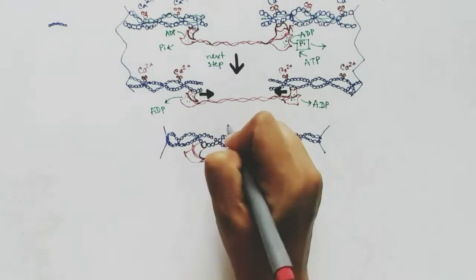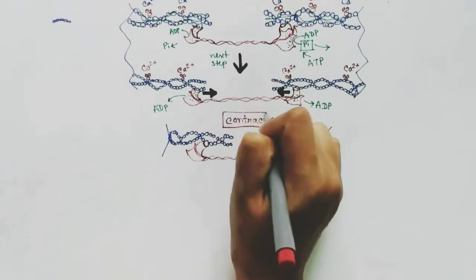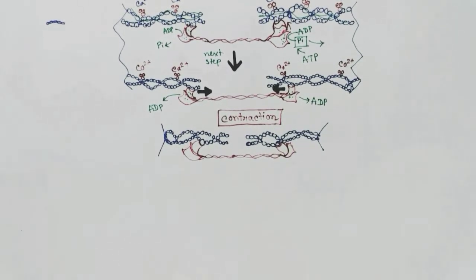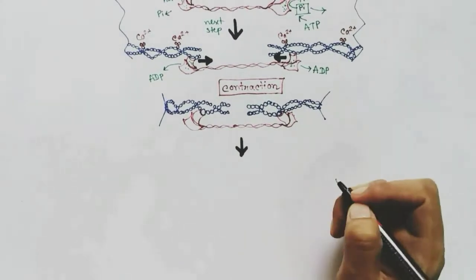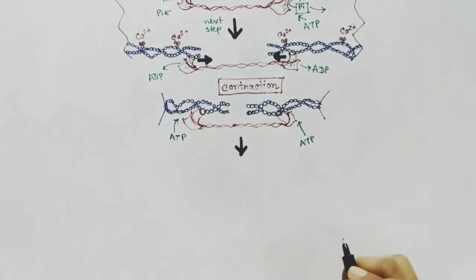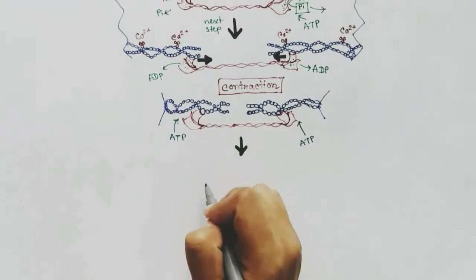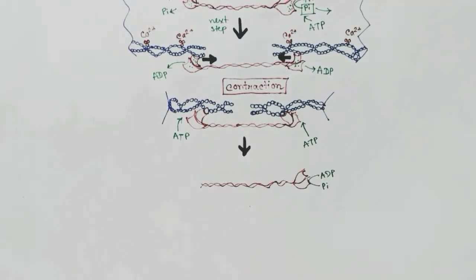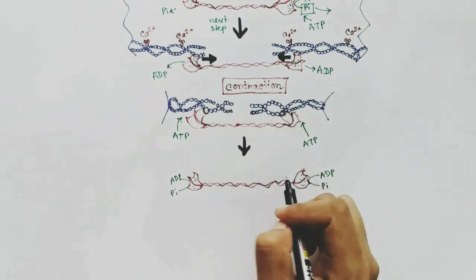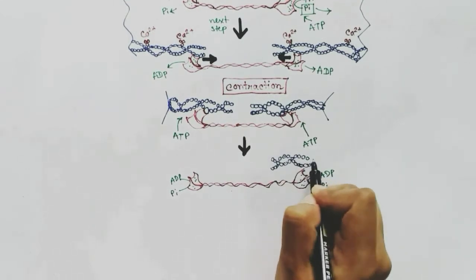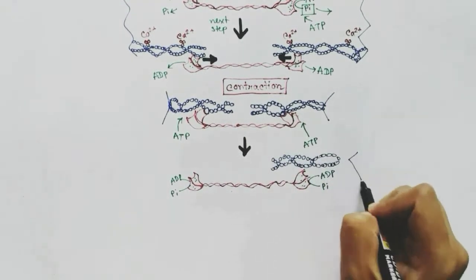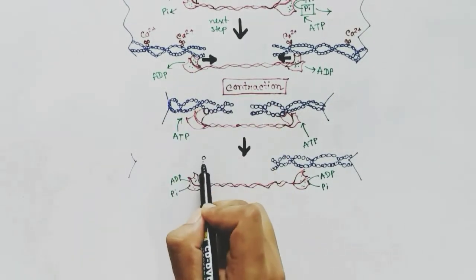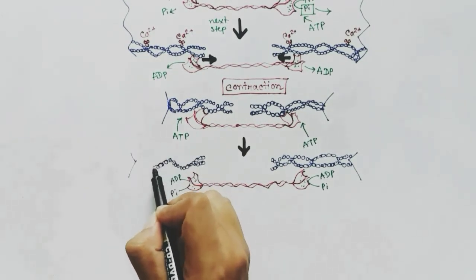This is how muscle contraction happens — this is the contracted muscle state. After contraction, one more ATP arrives at the myosin head. When ATP attaches, it forms ADP and phosphate, and the attachment between the thick filament and thin filament loosens — they detach and the myosin head returns to its previous position. The actin filaments also return to their previous position and the sarcomere length is restored. This is the relaxation process of the muscle.